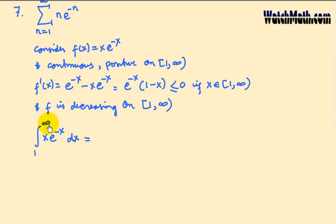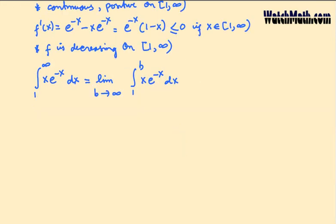This is an improper integral at infinity, so we write it as a limit of b approaches infinity, integral from 1 to b of xe^(-x) dx.